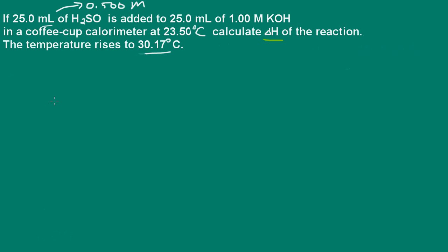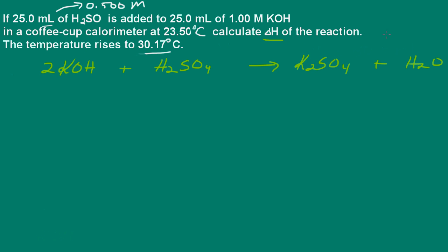Well, there are a few things that we need to do here. First, we need to write a balanced chemical equation. So, what we have is potassium hydroxide plus sulfuric acid, and that's going to produce potassium sulfate and water. Let's go ahead and balance this — I need a 2 in front of the potassium hydroxide and a 2 in front of the water. I'm all set there.